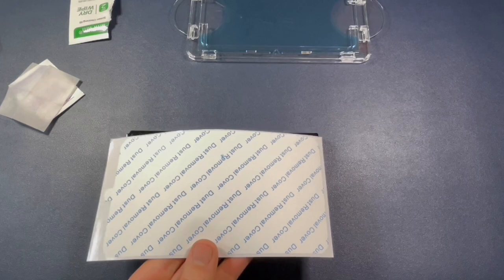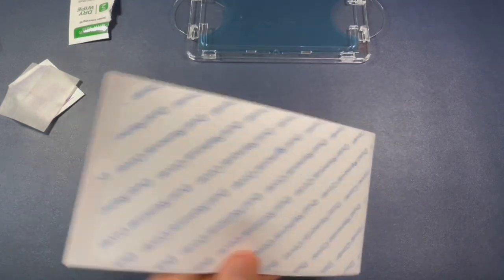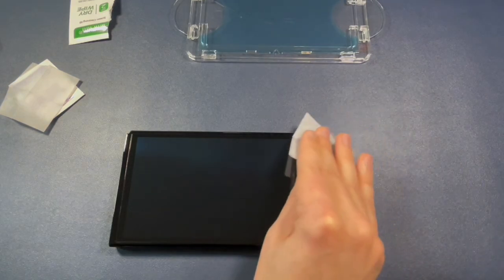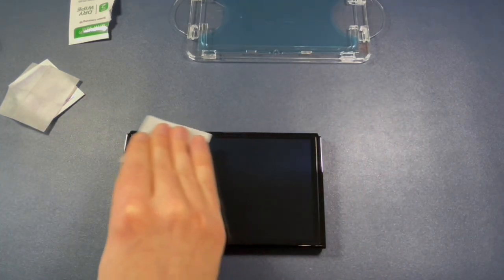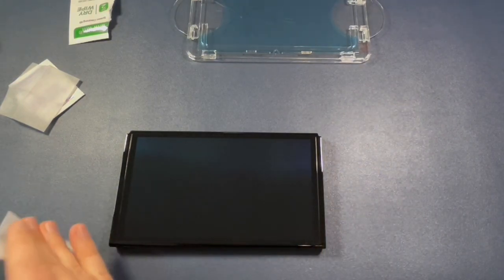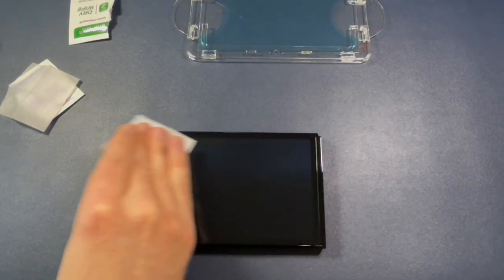So what the instructions actually recommend at this point is that you use this dust cover sticker. You peel this off. You place it down and then you peel it off here using the tab and that will sticker off any dust. But we're pros. We're doing it quick so we don't need that dust sticker. But if you have any anxiety about putting on your screen protector, and let's be honest, everyone does, I would use that dust sticker.